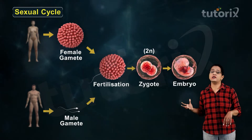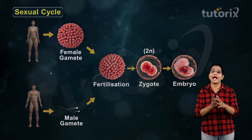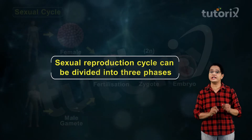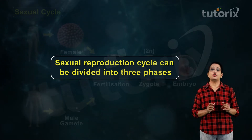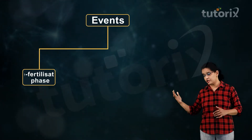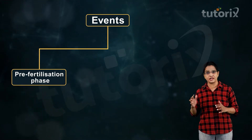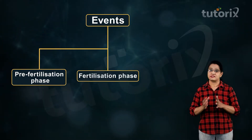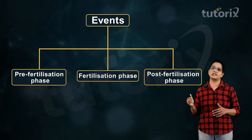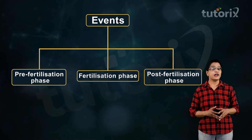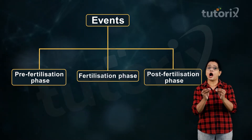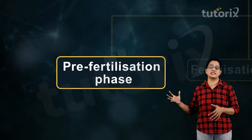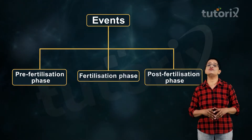This sexual reproduction cycle can be typically divided into three phases: the pre-fertilization phase, the fertilization phase, and the post-fertilization phase. In this session, let us have an outlook on the pre-fertilization stage, and we shall move to other stages in future sessions.